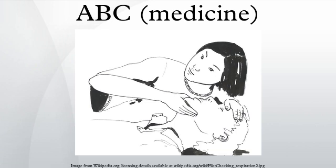Once oxygen can be delivered to the lungs by a clear airway and efficient breathing, there needs to be a circulation to deliver it to the rest of the body. Circulation is the original meaning of the C as laid down by Jude, Knickerbocker, and Safar, and was intended to suggest assessing the presence or absence of circulation, usually by taking a carotid pulse, before taking any further treatment steps.